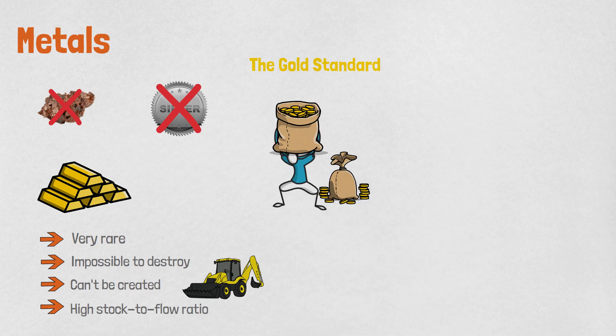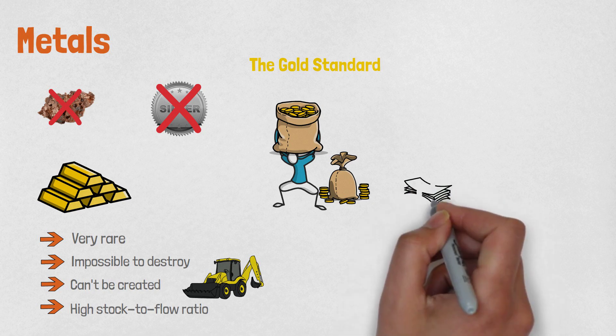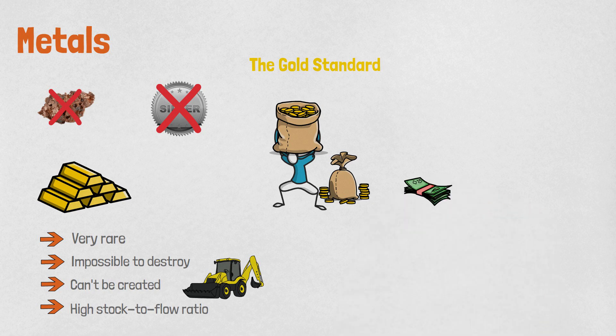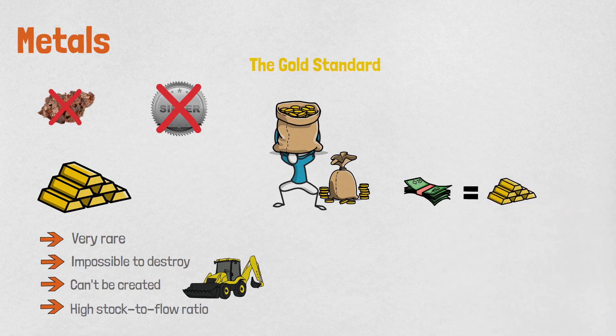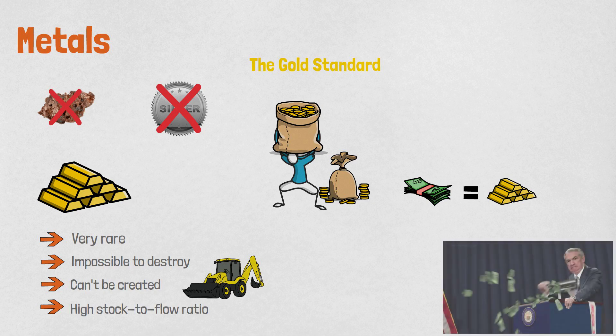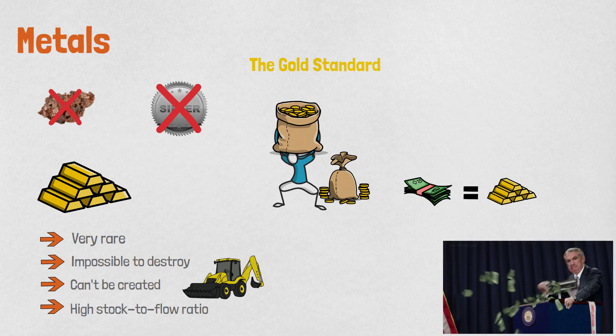That is why central banks started to print paper money that was backed by gold, meaning for every dollar there needed to be gold in that amount. However, not long after, the government understood that they can print as much money as they want, which was not backed by gold and people wouldn't do anything about it.